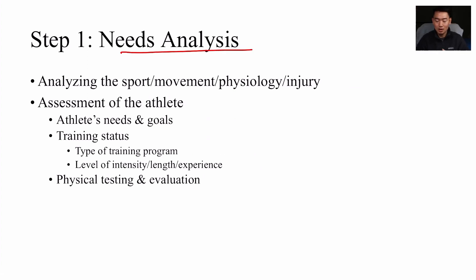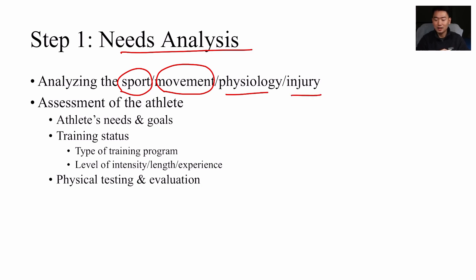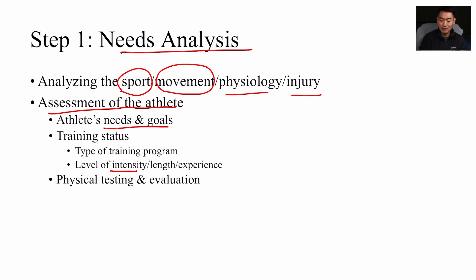Step one is needs analysis. We want to make sure we know what we're working with — whether that's a certain sport, a certain movement involved in that sport, or the athlete's physiology and injury history — to fully understand what task we've been given. We need to be aware of the athlete's needs and goals. When it comes to training status: have they been training at a certain intensity? How long have they been training? How much experience do they have? What kind of training have they been participating in — heavy weights, distance running?